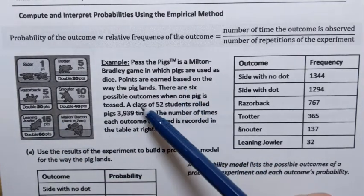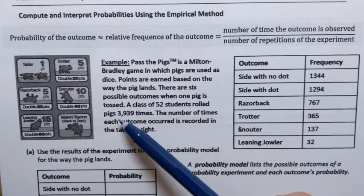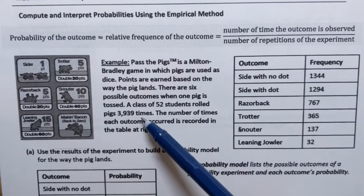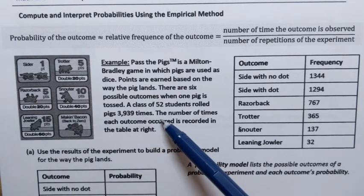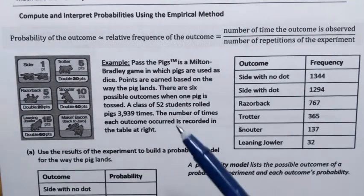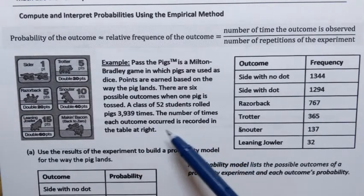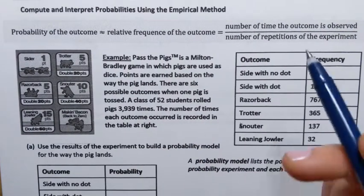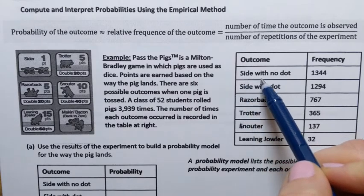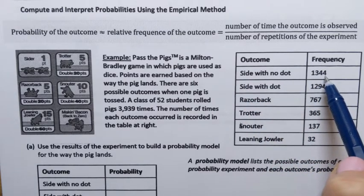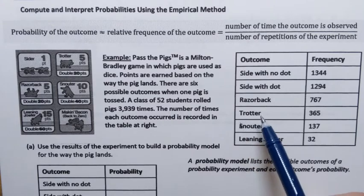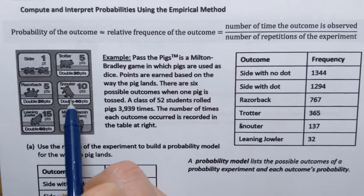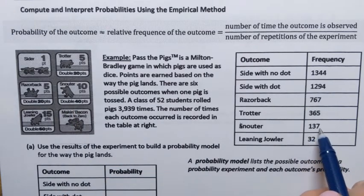A class of 52 students rolled pigs 3,939 times. The number of times each outcome occurred is recorded in a table. According to this table, the pig landed on the side with no dot 1,344 times, and the pig landed in the position called 'snouter' — where it has to land on its snout — only 137 times.